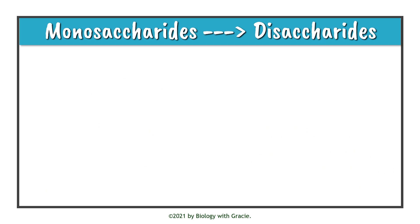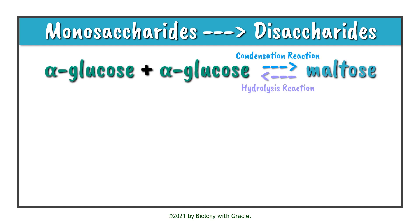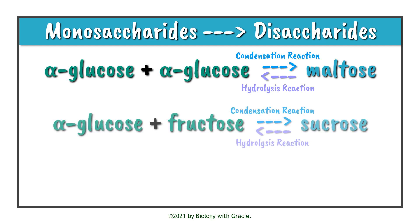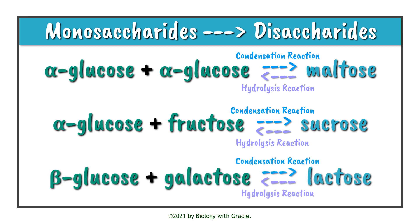Now let's look at some specific examples. Alpha glucose plus alpha glucose produces maltose via a condensation reaction, and a hydrolysis reaction gets back to alpha glucose molecules. Alpha glucose and fructose via condensation produce sucrose, and sucrose undergoes hydrolysis to get back to fructose and alpha glucose. Beta glucose and galactose via condensation produce lactose, and lactose undergoes hydrolysis to get back to beta glucose and galactose monosaccharides.